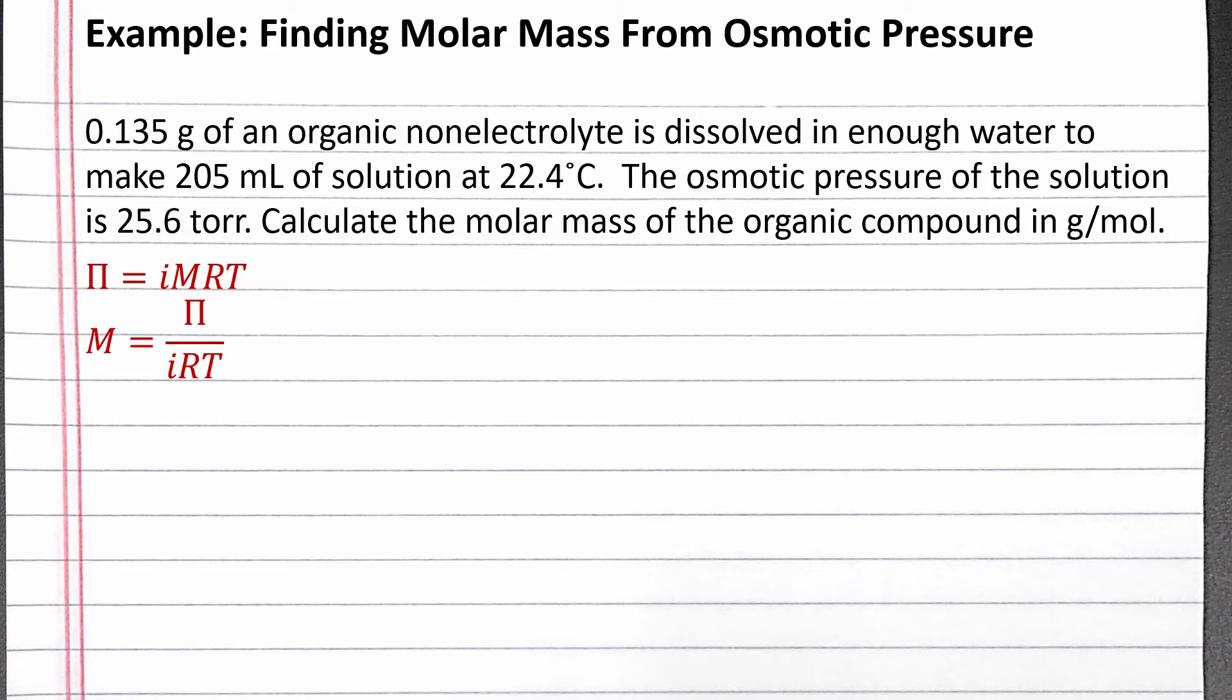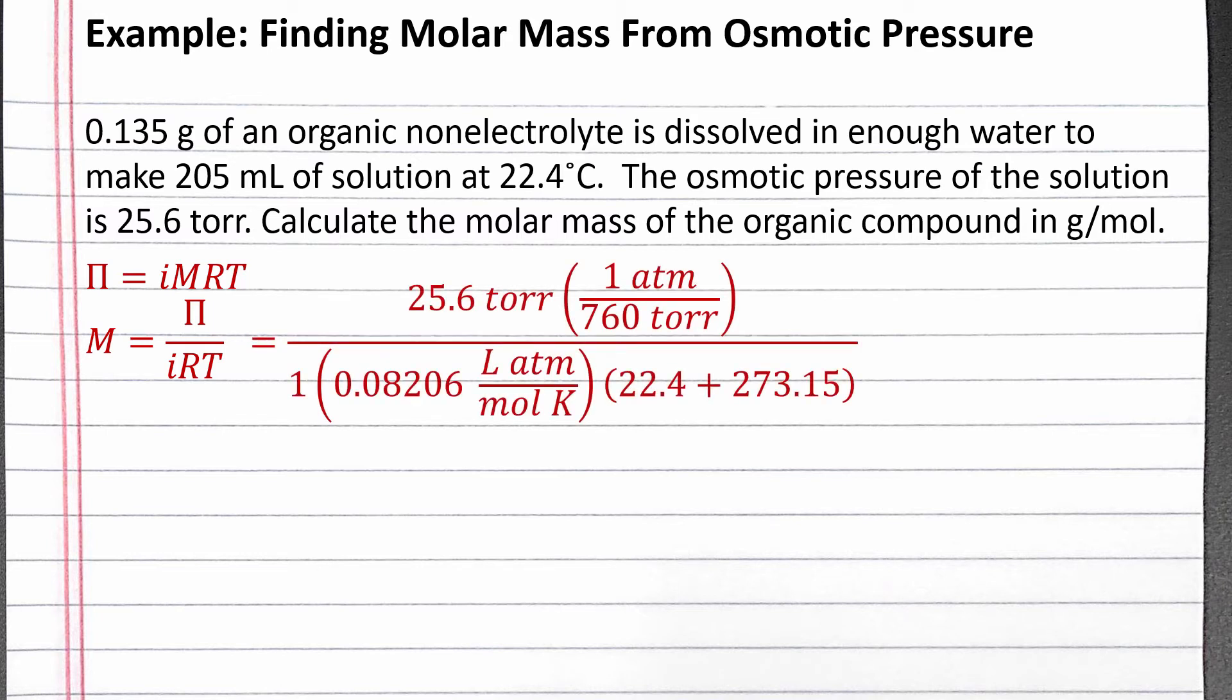The osmotic pressure is given in torr, so we need to convert it to atmospheres. The Vent-Hoff factor for a non-electrolyte is 1, so it does not change the equation. The ideal gas law constant is 0.08206 liter atmospheres per mole kelvin, and the temperature must be converted from degrees Celsius to kelvin by adding 273.15.